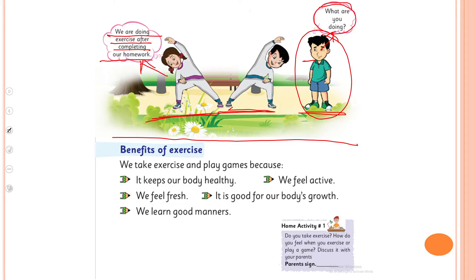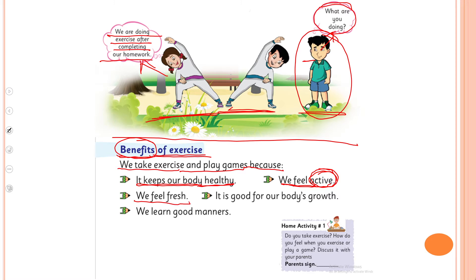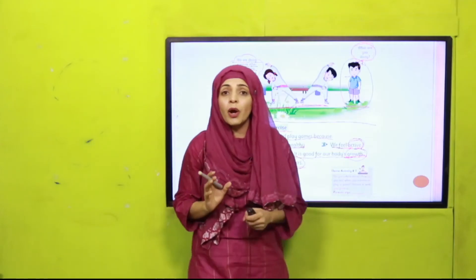Now put your fingers where I'm reading and concentrate on all the important words. Benefits of exercise — 'benefits' means all the importance of exercise. We take exercise and play games because exercise keeps our body healthy. We feel active and fresh. It is good for our body's growth — meaning when you exercise, you will grow more.